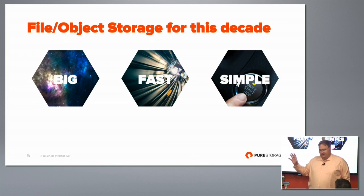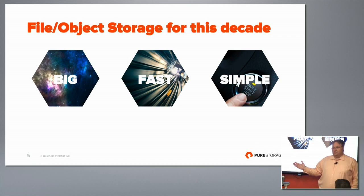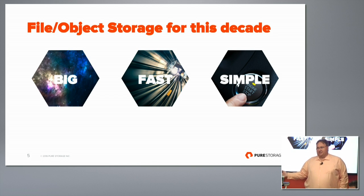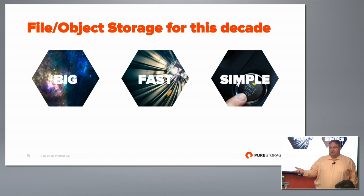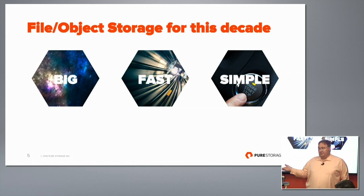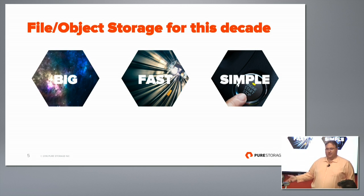Ultimately, we're trying to design a product that encapsulates three values. First, we're trying to build something that can become really big — these data sets are growing exponentially, so you need a system that can start small and become really, really big and dense. It has to be fast: when you're interacting with thousands, tens of thousands, even hundreds of thousands of CPU cores, it needs to serve all of them concurrently. But it also needs to be really simple — simple to upgrade, set up, and operate. You don't want to create aggregates and RAID groups and stripes. You want the machine to self-balance, self-level, so when you add capacity it's instantaneously available.